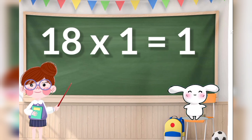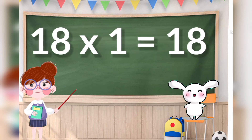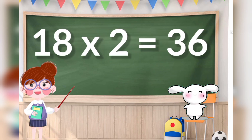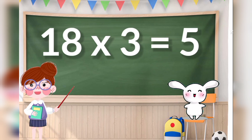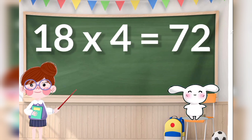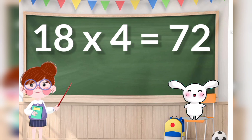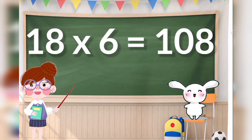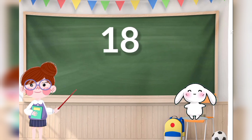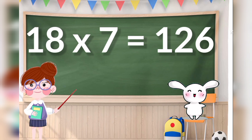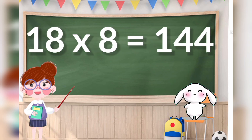18 ones are 18, 18 twos are 36, 18 threes are 54, 18 fours are 72, 18 fives are 90, 18 sixes are 108, 18 sevens are 126, 18 eights are 144.